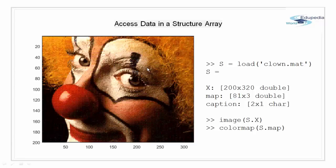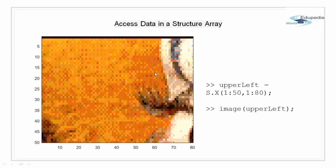So using the image function and passing the X parameter of the structure S and using the color map of S dot map I am getting the image as shown here. We can also access only a part of a field instead of a whole field. As shown here using appropriate indices for the size we can access only a small portion of the image. Here I have accessed a small upper left corner of the clown image. So I have put some size like 1 to 50 and 1 to 80. So we will have like 80 fields on the X axis and 50 fields on the Y axis.